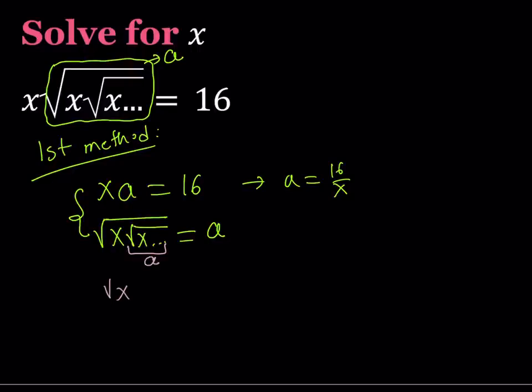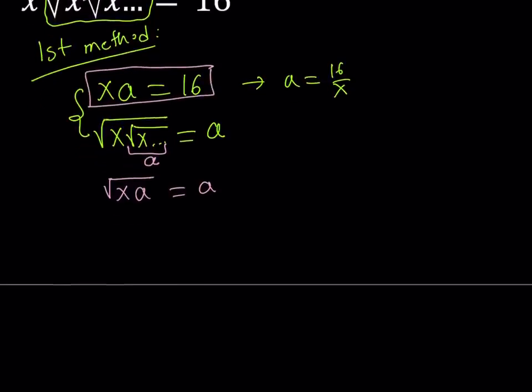So we get something like the square root of xa equals a. But we know that xa is equal to 16. So I can just go ahead and replace xa with 16. The square root of 16 is just going to be 4. This gives us a equals 4. But we also know that their product is 16. Therefore, x equals 4 from here. Easy, right?